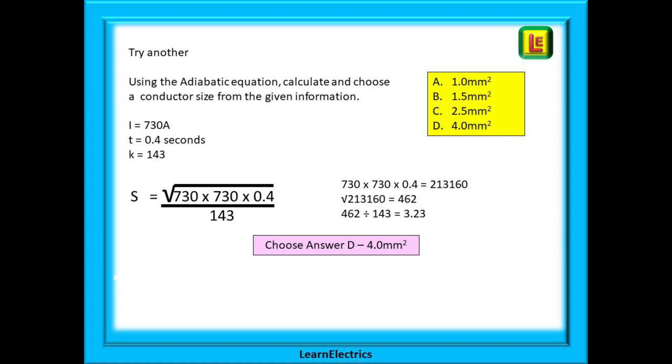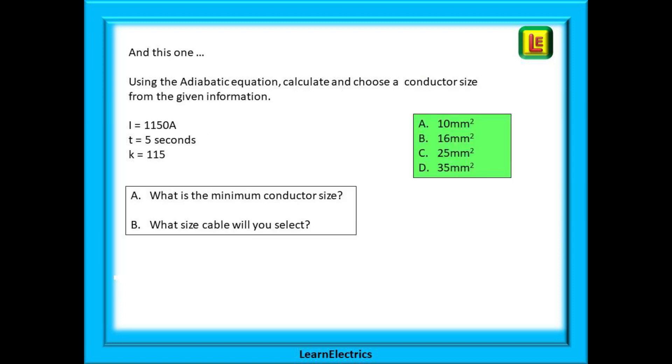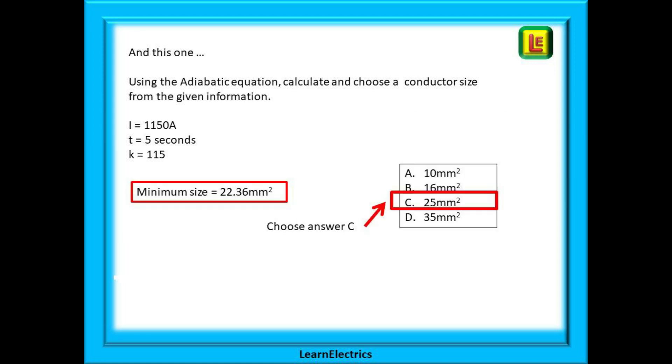And not just for the exam, this is what you would choose on site in the real world. Now do this one using the information that is provided. Pause the video whilst you do the calculation. And you should have a minimum size of 22.36 millimeters making you select Answer C, the 25 millimeter conductor.